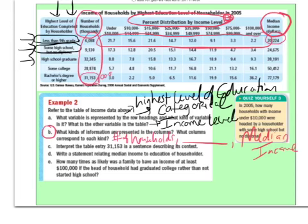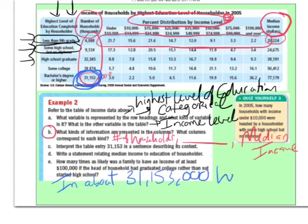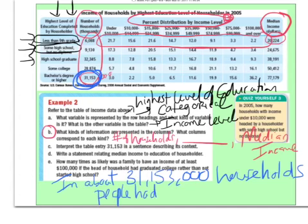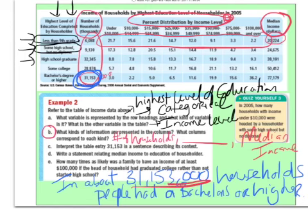Part C. Interpret the table entry 31,153 in a sentence describing its context. Here it is. We actually kind of touched on it already. Here's what I would say for part C. Part C says that in about, state this properly, 31,153,000 households. People had a bachelor's degree or higher. Now, what you also could have said for this in context is this. You could have said, instead of writing out the number like this, you could have written 31,153, and then put the word thousands behind it. That would have been acceptable also.